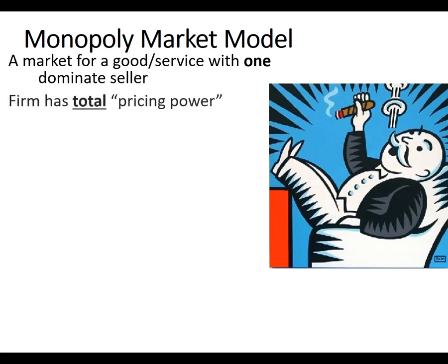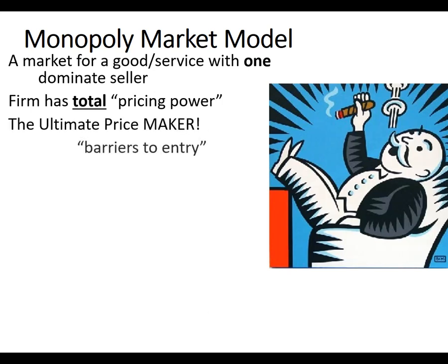So basically a firm with a monopoly has total pricing power. The firm can't charge whatever they want, but they can charge up to where it hits the demand curve — we'll look at a graph later. So they are a price maker. The thing that causes this is called a barrier to entry: something that stops new firms from getting into the market and competing. This is important to think about for your paper for this class, but also for your business.